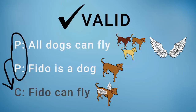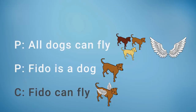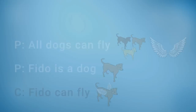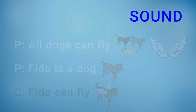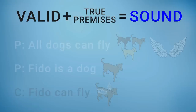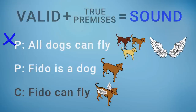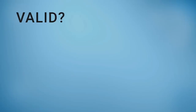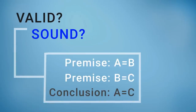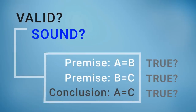But let's put this argument under more scrutiny. This is a valid argument, but it is not a sound argument. Soundness is an evaluation of both whether an argument is valid and whether its premises are true. A sound argument must be both valid and have true premises. Not all dogs can fly, so one of the premises is false and our argument is not sound. Validity and soundness are properties of an argument, and truth is a property of a statement.